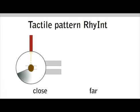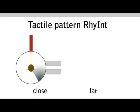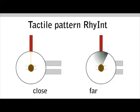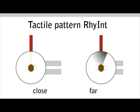In the fifth pattern, directions are indicated as a single pulse for the current direction and a double pulse for the desired direction. Intensity shows the distance.